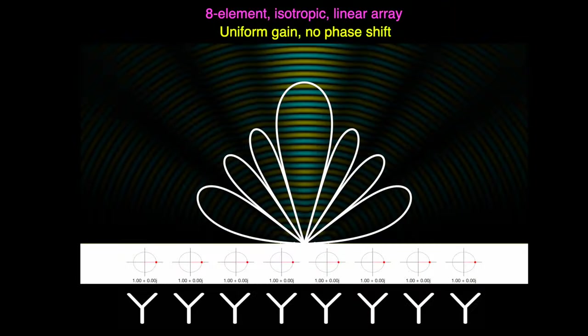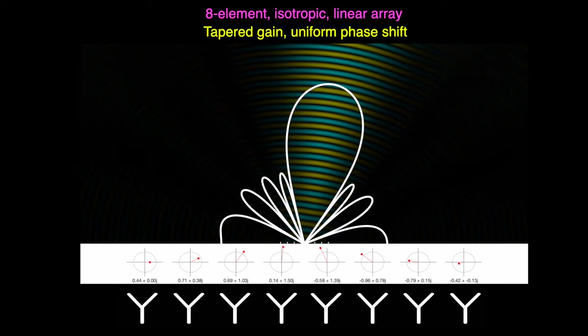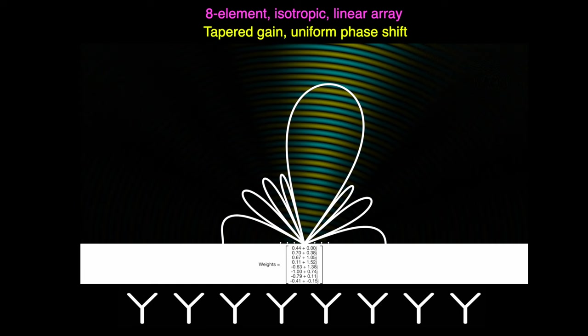So, now if we zoom back out, we have 8 complex numbers representing the gain and phase for each of the elements in our array. And finally, these numbers all packaged together are the weights for the array. They represent the unique gain and phase that is applied to each element.